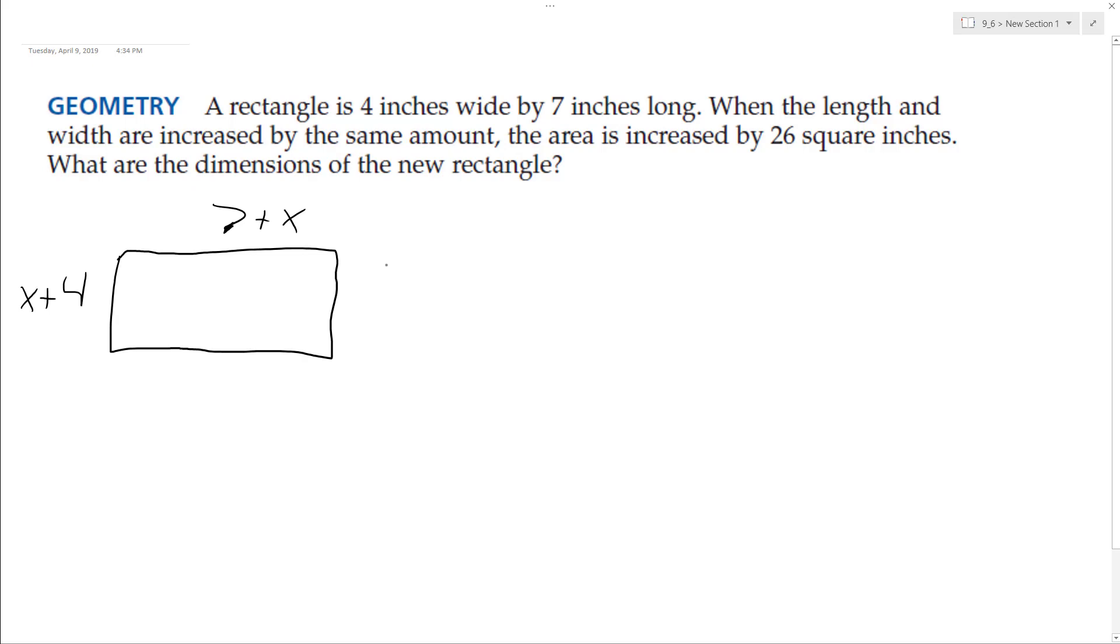We need to find the dimensions of the new rectangle. The old area was 7 times 4 equals 28. The new rectangle has dimensions X plus 4 times X plus 7, which equals 28 plus 26.